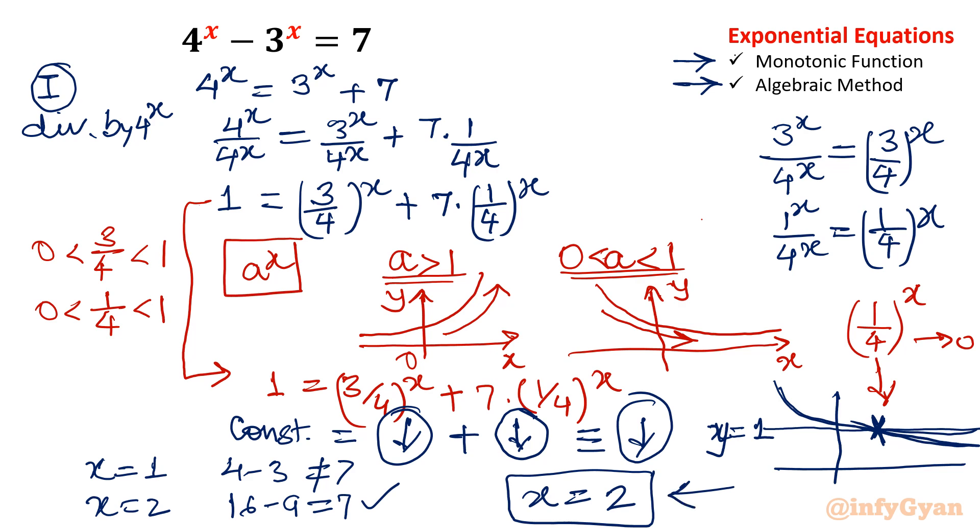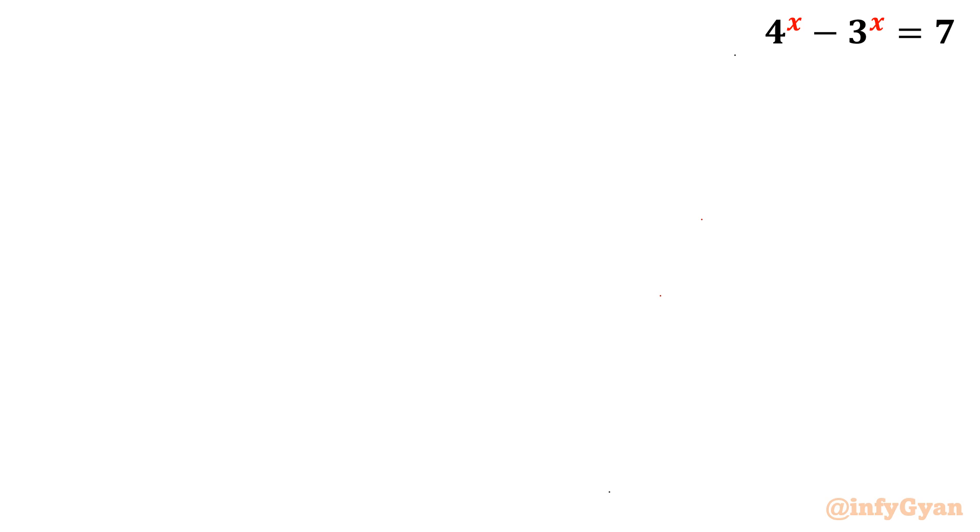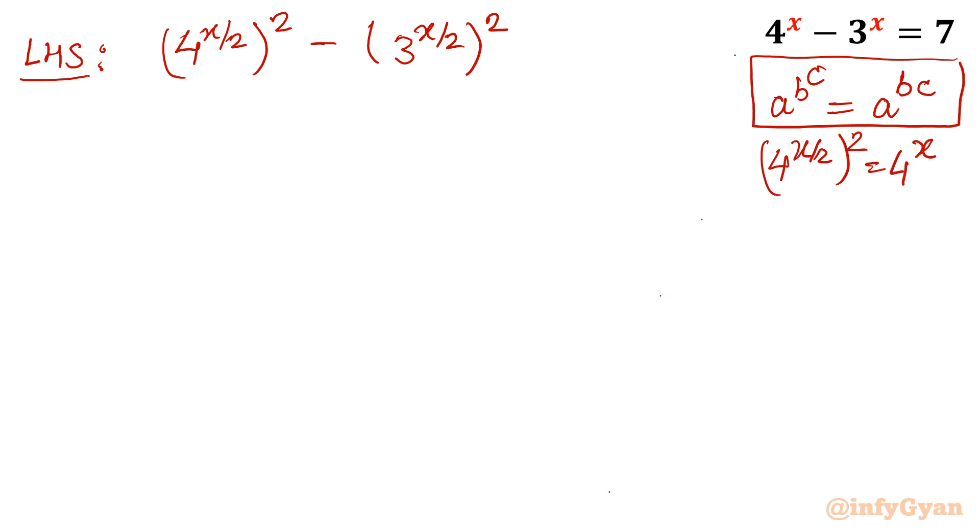Now come to algebraic solution, which is more interesting. I will write 4 raised to the power x as 4 raised to the power x over 2 whole square minus 3 raised to the power x over 2 whole square. Your LHS. How it is possible? Because we know that a power b power c can be written as a power bc. I use that exponent property. By that property I can write 4 power x over 2 whole power 2. Once I will multiply, it will come out 4 power x.